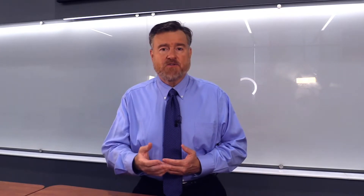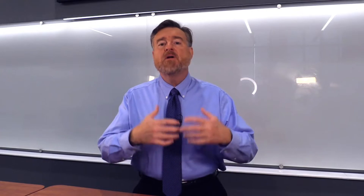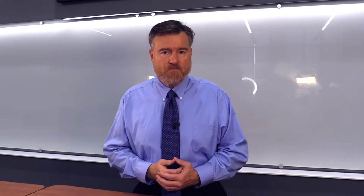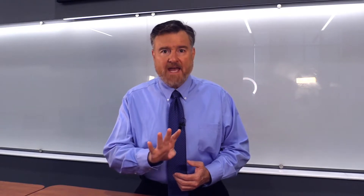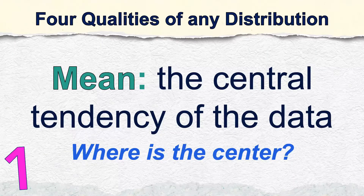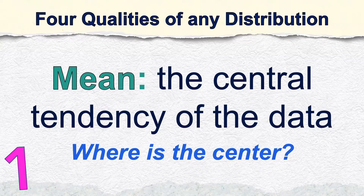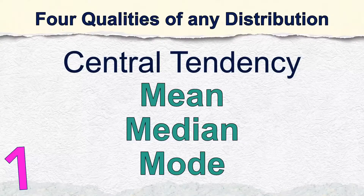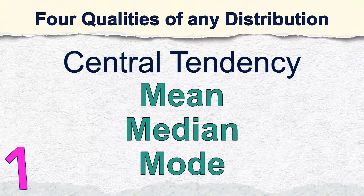Imagine we have a distribution of heights or weights — a large number of numbers about a particular variable. There are four questions that we want to answer about that distribution. Question number one: where is the center of the distribution? What number is in the middle? What number best represents all of the other numbers in that distribution? Typically we will answer this using a mean, which is our go-to measure of central tendency, but we also have options like the median and the mode. Measures of central tendency tell us where the center of the distribution tends to be located.